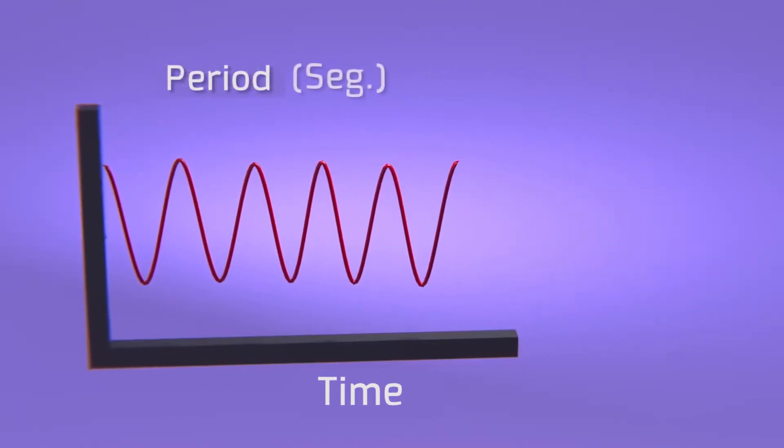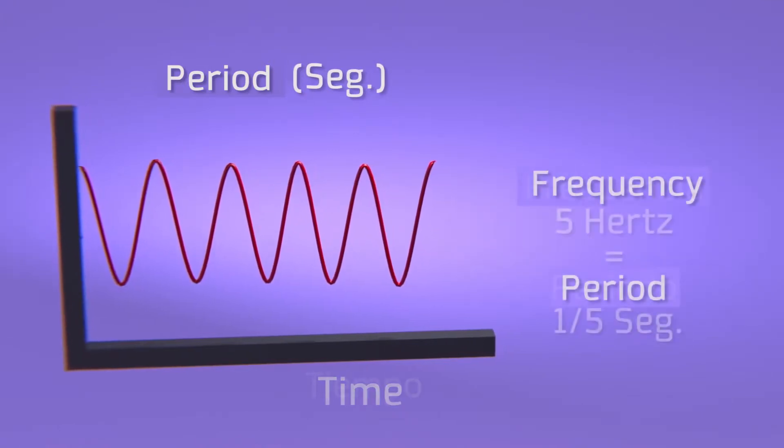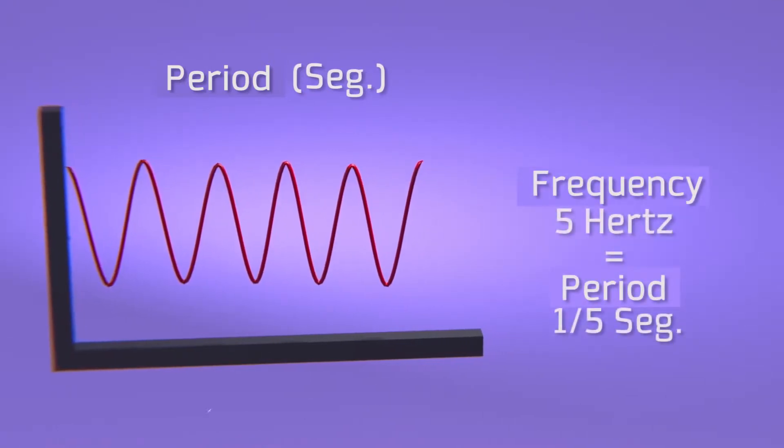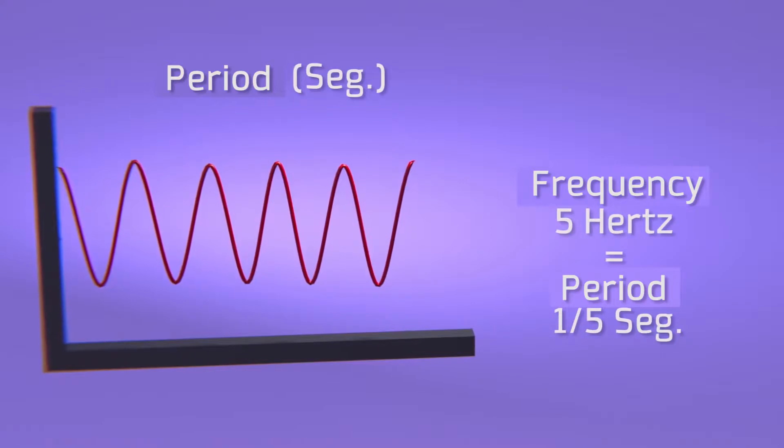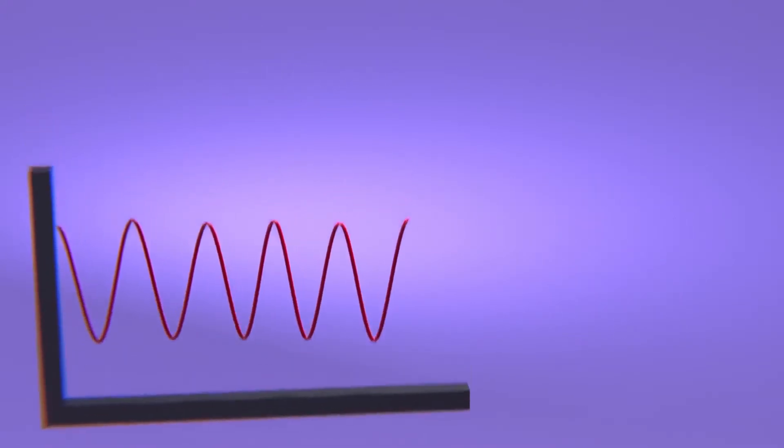And the third characteristic is the period of oscillation, which is basically the inverse value to the frequency. In this case, if the frequency was 5 Hz, then the period of an oscillation is a fifth of a second.